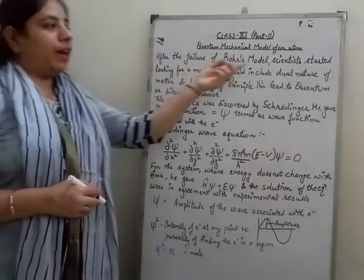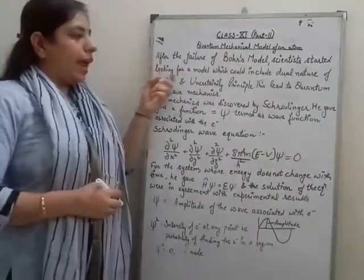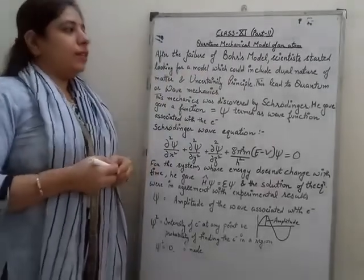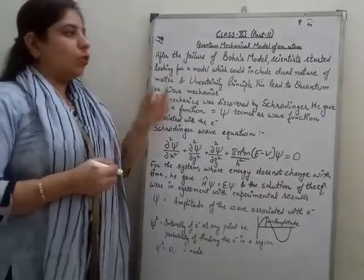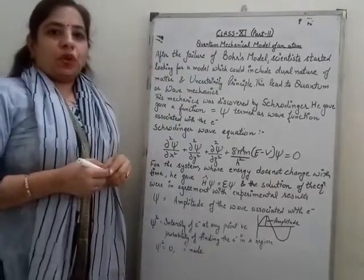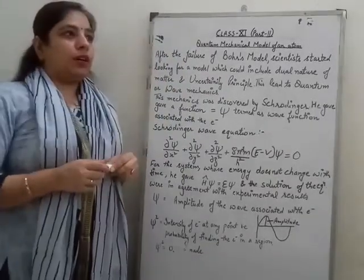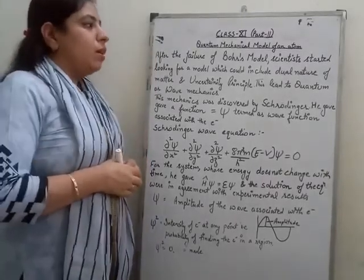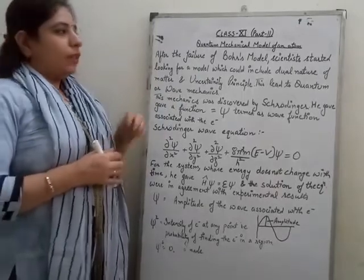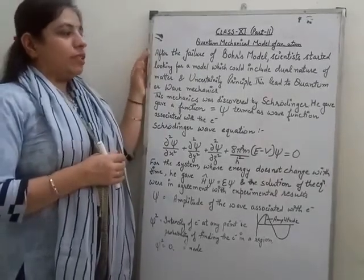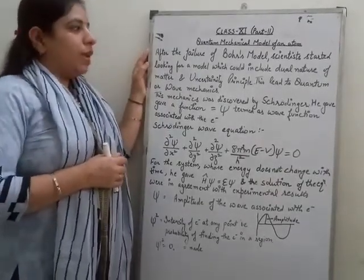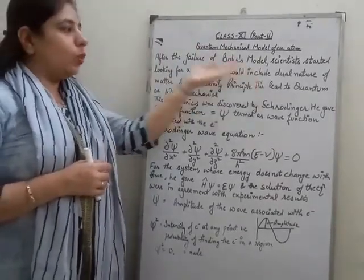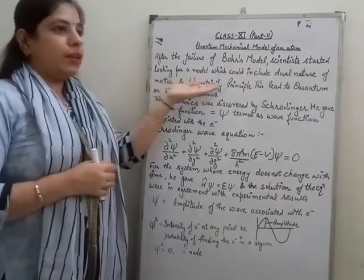After the new developments — the dual nature of matter and the uncertainty principle given by Heisenberg — these gave drawbacks to Bohr's model, which was the perfect model for explaining the structure of an atom. These discoveries gave a setback to Bohr's model, and scientists started looking for a model that could include both the dual nature of matter and the uncertainty principle.